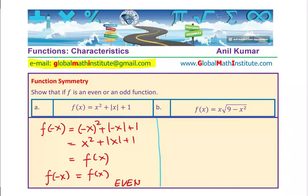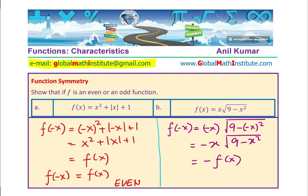Now, let's continue. Part B is f(x) = x√(9 - x²). Let's figure out its symmetry by substituting x as -x. So f(-x) will be -x√(9 - (-x)²), which gives us -x√(9 - x²). So indeed, this is -f(x), and therefore it has odd symmetry. So you see how we prove that a function has even symmetry or odd.